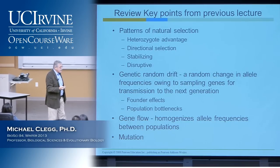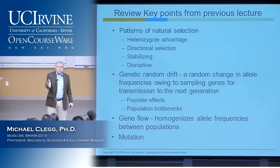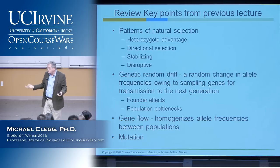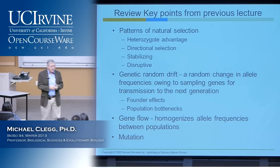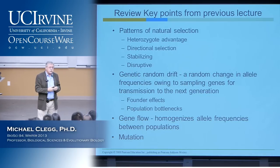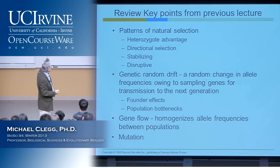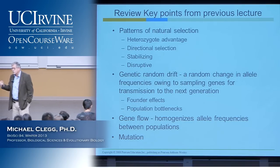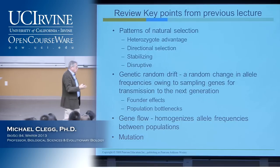We talked about directional selection and looked at how it operates on a frequency distribution — where you take one extreme, say the right-hand extreme, because those individuals possess a trait favored in a particular environment. We saw an example in the first lecture when we talked about human selection for high levels of protein in corn and maize seeds. Directional selection leads to the fixation or loss of alleles because it favors the more extreme types.